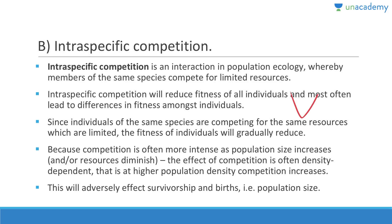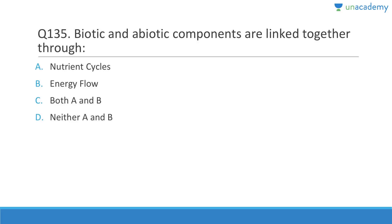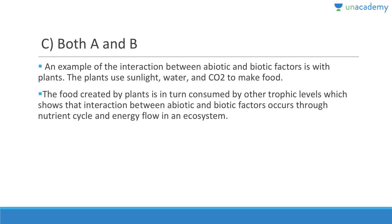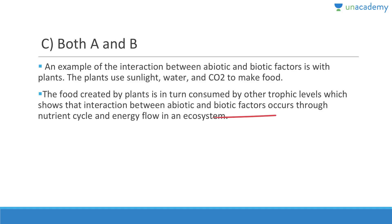Biotic and abiotic components are linked together through nutrient cycles and energy flow. An example is plants using sunlight, water, and CO2 to make food, which is then consumed by primary consumers and secondary consumers — showing that interaction between abiotic and biotic factors occurs throughout the nutrient cycle and energy flow in an ecosystem.